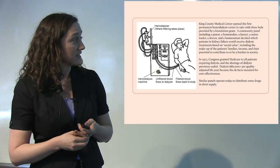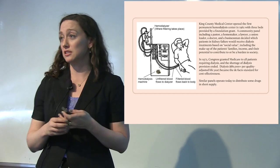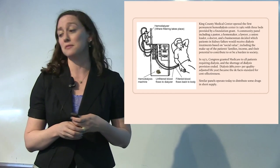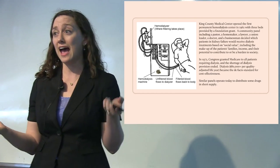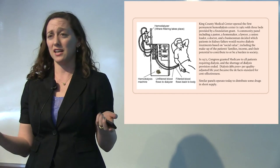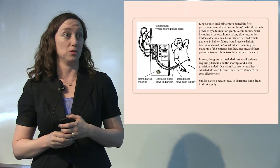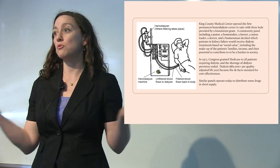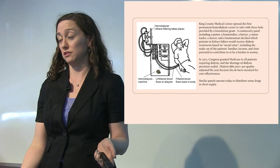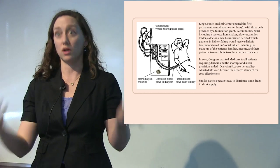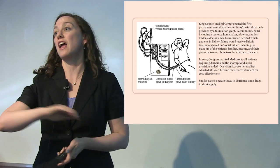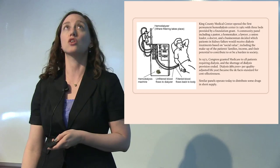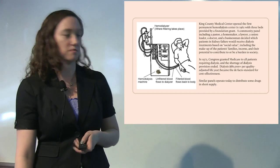The panel included questions like how much does this person earn and do they have children they're providing for. The reason they had to make this decision was they didn't have enough dialysis machines — and that was curable with more money. Eventually Congress decided that anyone with end-stage renal disease qualifies for Medicare, so the U.S. government pays for everyone on dialysis in the U.S. They didn't realize how incredibly expensive this would be.